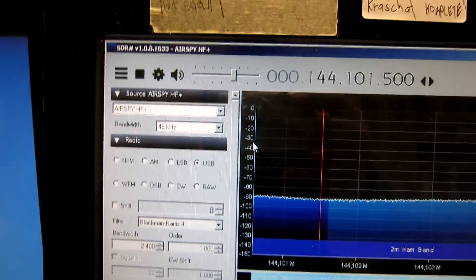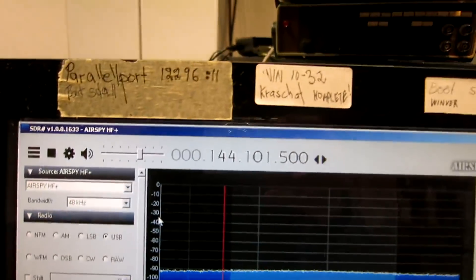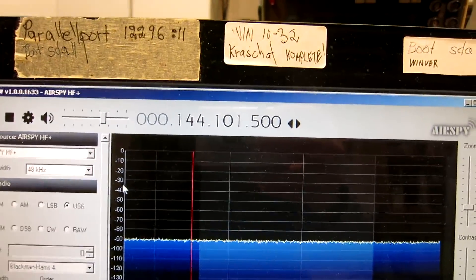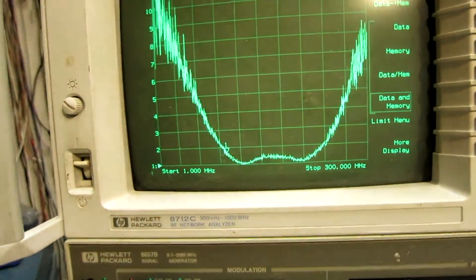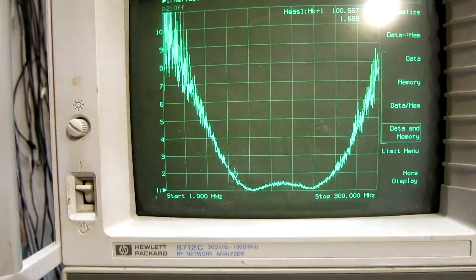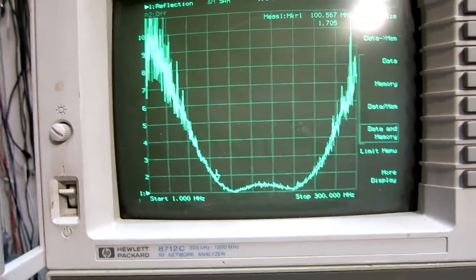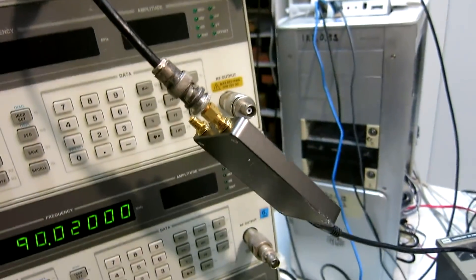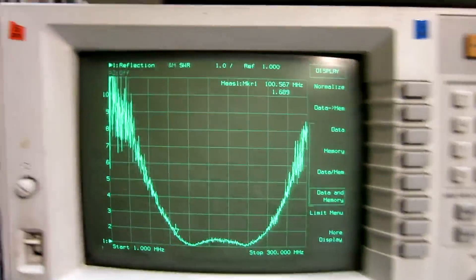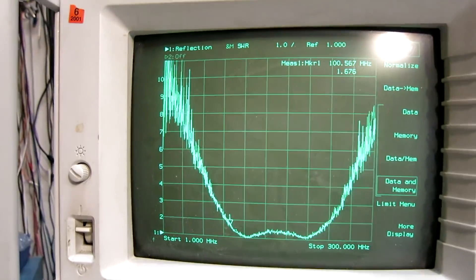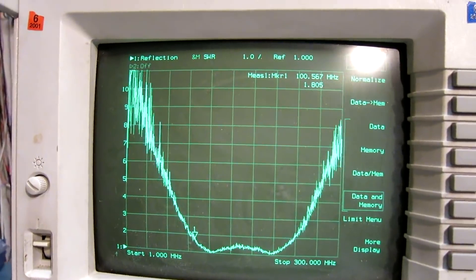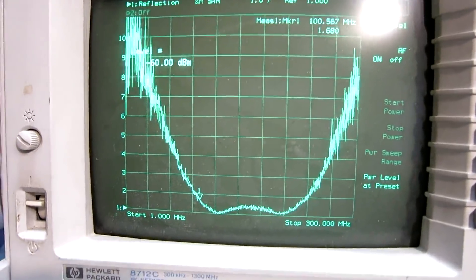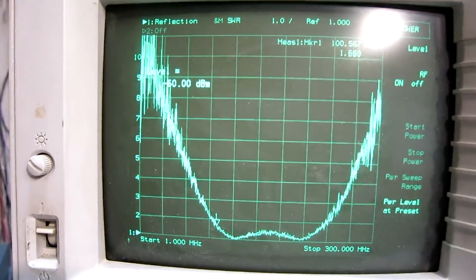I'm still running the HF Plus at 144 MHz, but now I'm looking at it with the network analyzer. And this is the standing wave ratio. And I have the box sitting quite close. The power level now, you see it says minus 60 dBm.